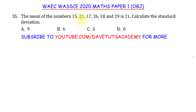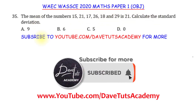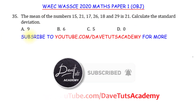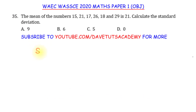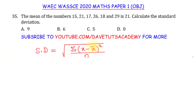The mean of the numbers 15, 21, 17, 26, 18 and 29 is 21. We are to calculate the standard deviation. The standard deviation is given as the square root of the variance, and the variance is given as the sum of the square of the difference between each data entry and the mean, over the total number of entries. So x-bar is the mean, and x is each of the consecutive terms. We square the difference, sum them, and divide by the total number of elements.